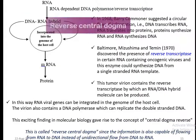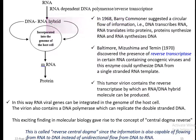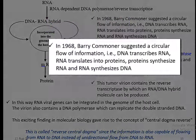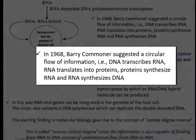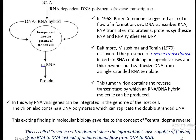Next comes the Reverse Central Dogma. To understand it, we first need to know the hypothesis stated by Barry Comner, who suggested that genetic information could flow in a circular manner. That is, DNA transcribes into RNA, RNA translates into protein, proteins can influence the synthesis of RNA, and RNA can synthesize DNA — a circular flow of information.